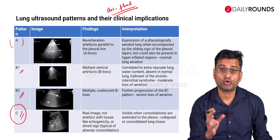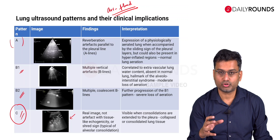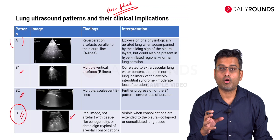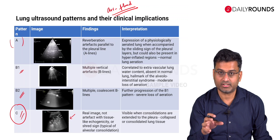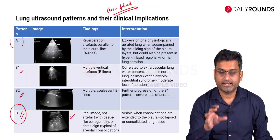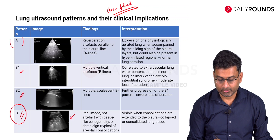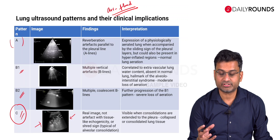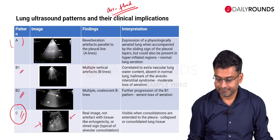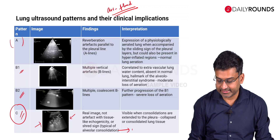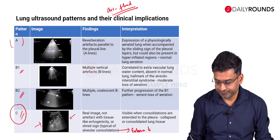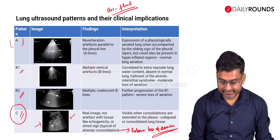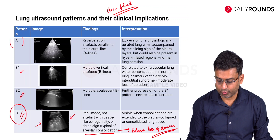The C pattern is your consolidation pattern. Whenever there is tissue consolidation, lung consolidation, atelectasis, or collapse, there is complete loss of aeration at that particular zone of the lung. That area is easily picked up by lung ultrasound, giving an image where the lung resembles solid tissue. This is typically seen in consolidation but can also be seen in lung collapse.